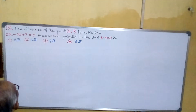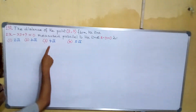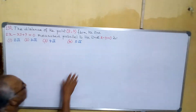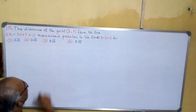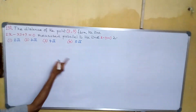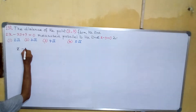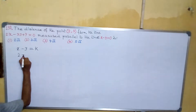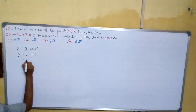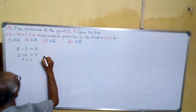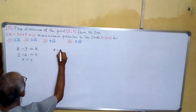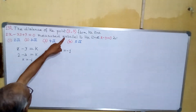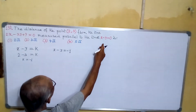The distance of the point (2, 3) from the given line, measured parallel to another line. First we have to find a line parallel to x − y = 0 passing through (2, 3). Any line parallel to x − y = 0 is x − y = k. Since it passes through (2, 3): 2 − 3 = k, so k equals to minus 1. Hence the line is x − y = −1, which passes through (2, 3) and is parallel to the reference line.